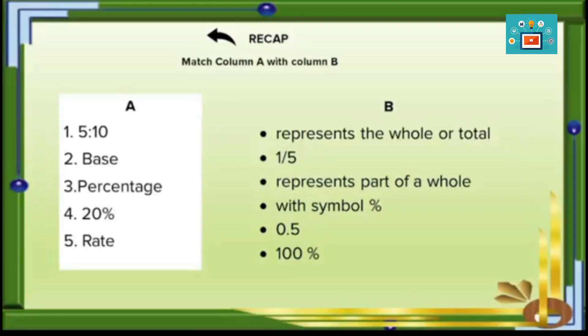Let's proceed to the recap — a review of our previous lesson. Match column A with column B. Number one: 5 is to 10 — as an example, 5 is to 10 matches to five-tenths in column B. Now for the remaining items: number two is base, number three is percentage, number four is 20%, and number five is the rate. I'm giving you five seconds to answer; the timer starts now.